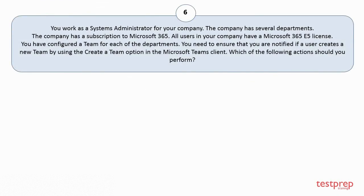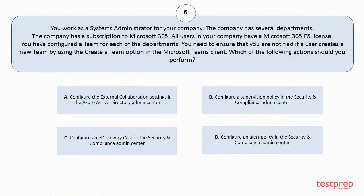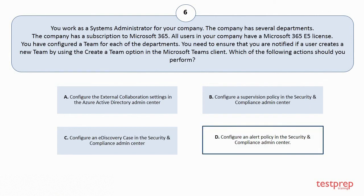Question 6. You work as a systems administrator for your company. The company has several departments. The company has a subscription to Microsoft 365. All users in your company have a Microsoft 365 v5 license. You have configured a team for each of the departments. You need to ensure that you are notified if a user creates a new team by using the create a team option in the Microsoft Teams client. Which of the following actions should you perform? Your options are: A. Configure the external collaboration settings in the Azure Active Directory Admin Center. B. Configure a supervision policy in the Security and Compliance Admin Center. C. Configure an eDiscovery case in the Security and Compliance Admin Center. D. Configure an alert policy in the Security and Compliance Admin Center. The correct answer is Option D.